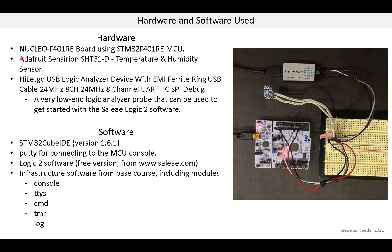There is a temperature sensor — this part right here — and it comes from Adafruit and it uses a Sensirion SHT31-D sensor chip. Then there is a logic analyzer. I got this off Amazon; it's a very low-end analyzer probe and it allows you to get started with the Saleae Logic 2 software. Saleae makes logic probes that are much nicer than this — they have more channels, they support analog and so forth — but this is a nice way just to get started. At work I've used the Saleae probes.